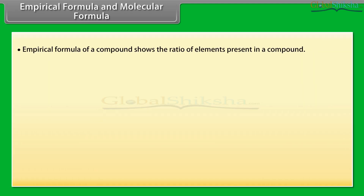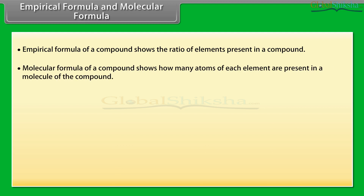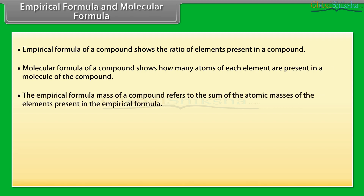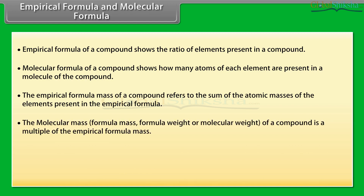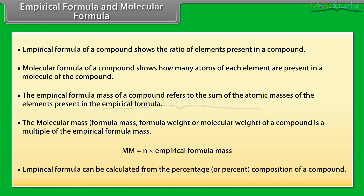Empirical formula and molecular formula: the empirical formula shows the ratio of elements present in a compound. The molecular formula shows how many atoms of each element are present in a molecule. The empirical formula mass is the sum of atomic masses in the empirical formula. The molecular mass is a multiple of the empirical formula mass: MM equals N times the empirical formula mass.